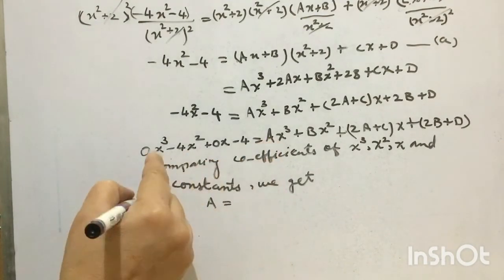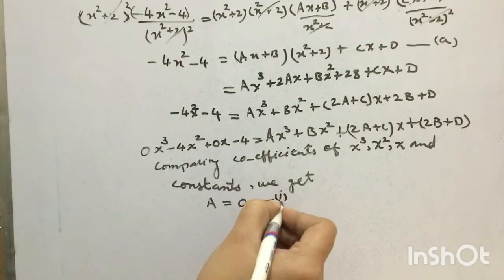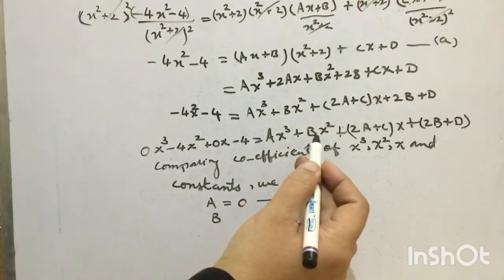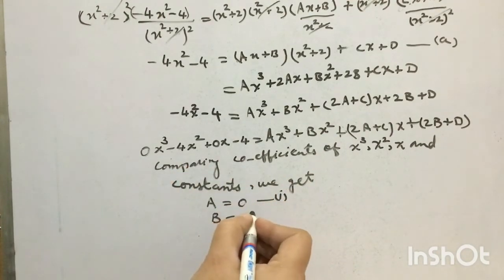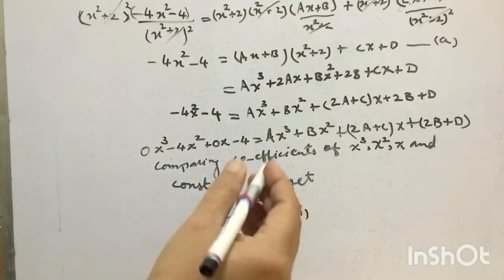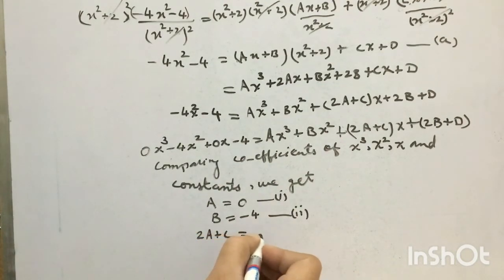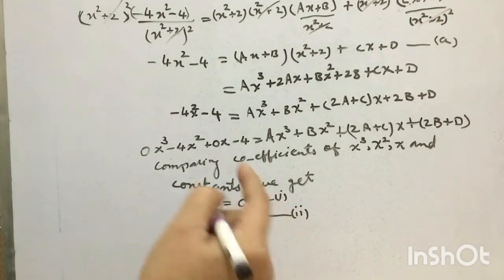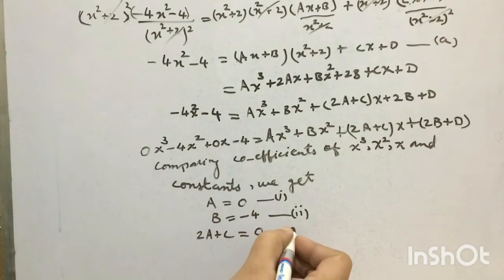Since ax cube equals 0x cube, the value of a is 0 — that is the first equation. Then b, the coefficient of x square, is equal to minus 4. Then 2a plus c is equal to 0, which is the coefficient of x on the left-hand side.